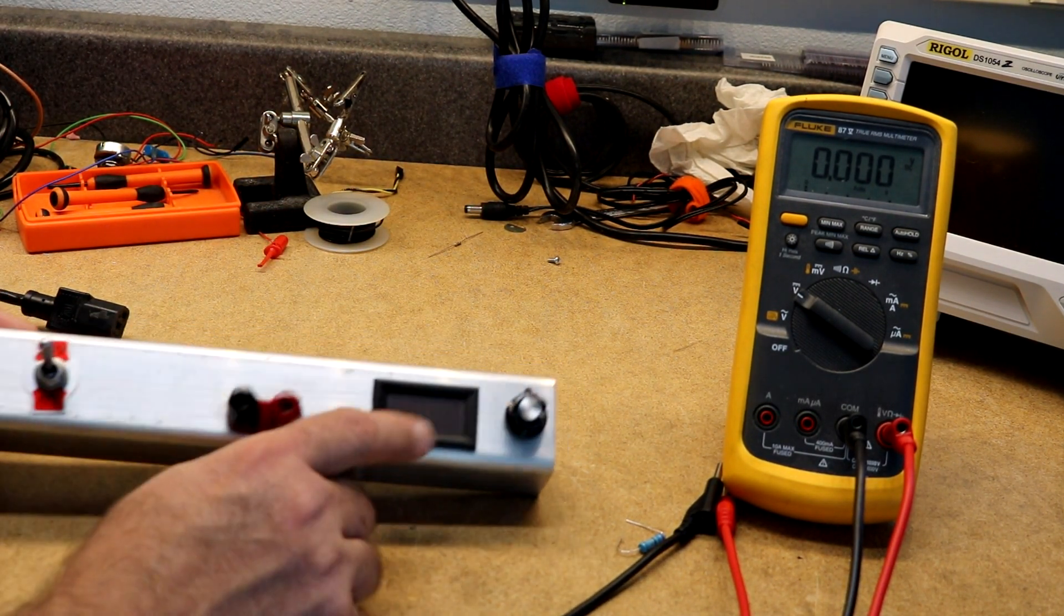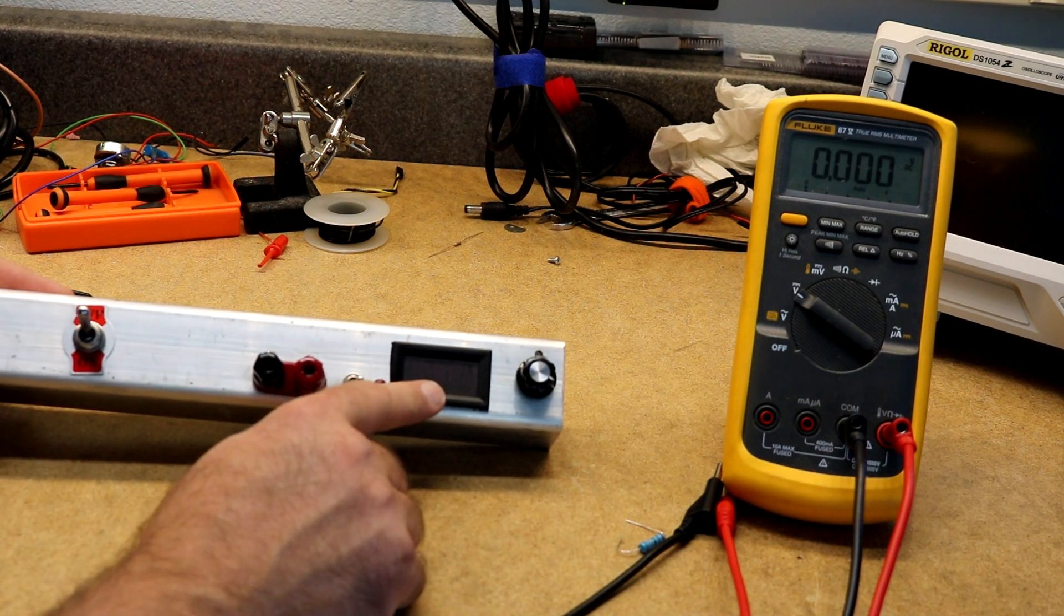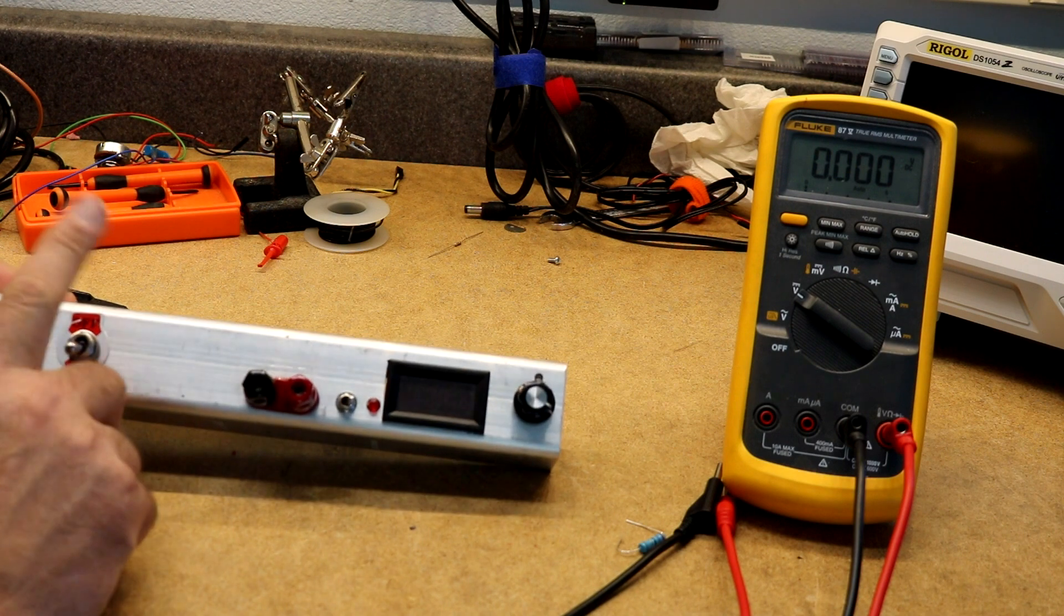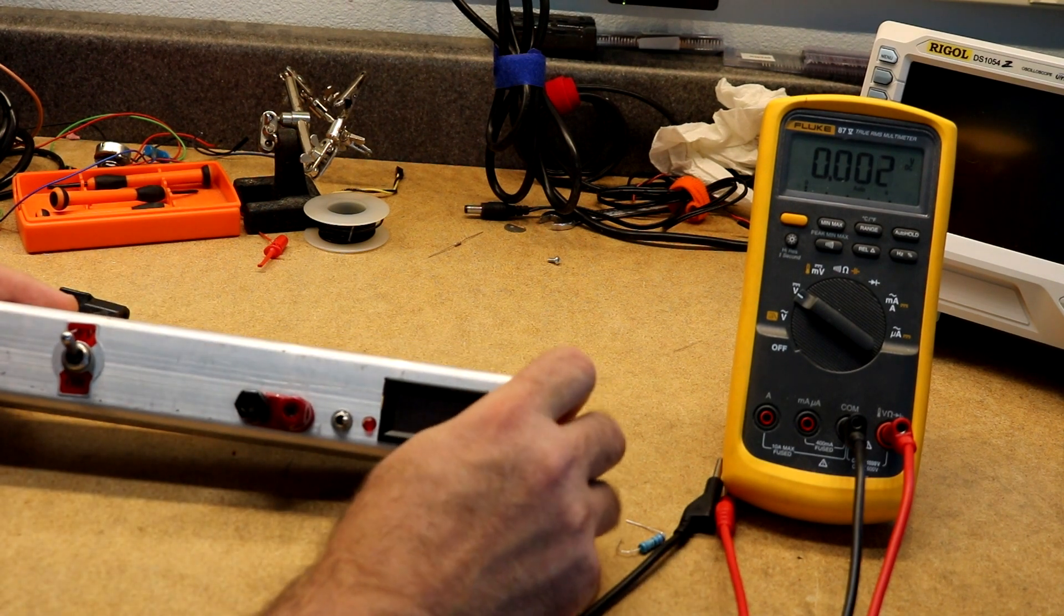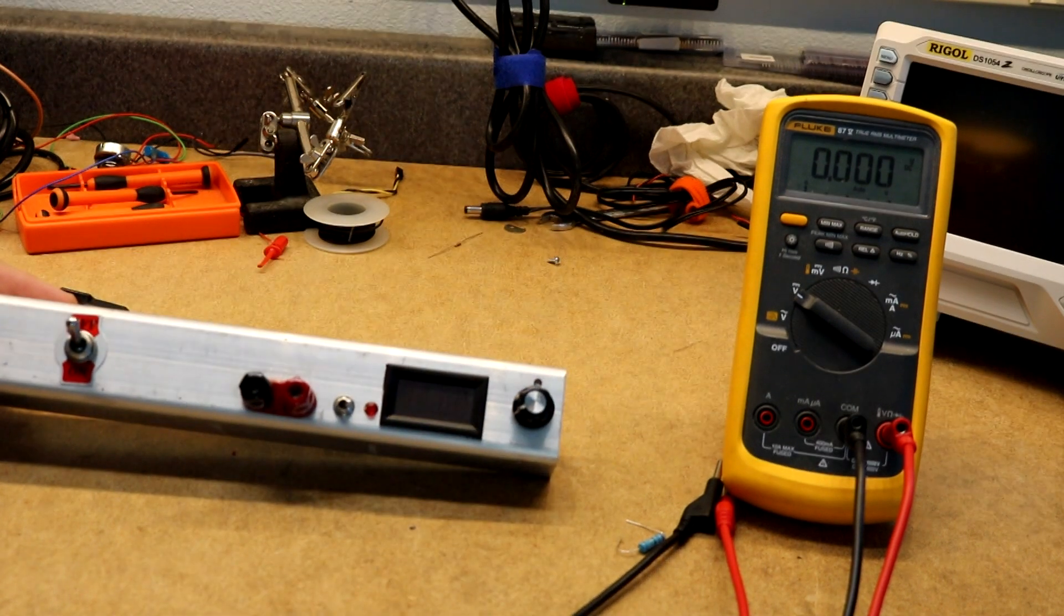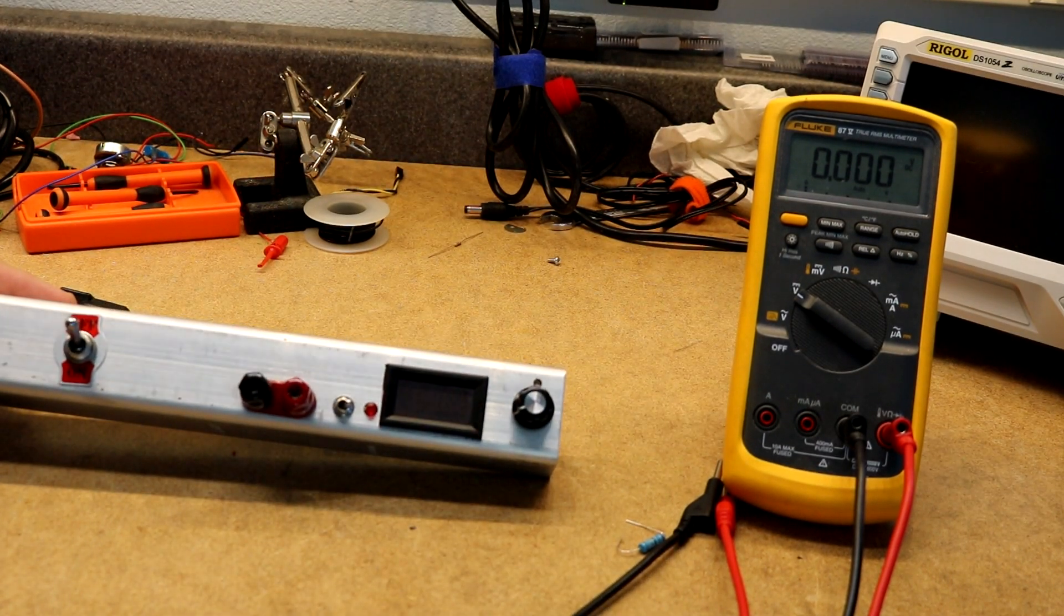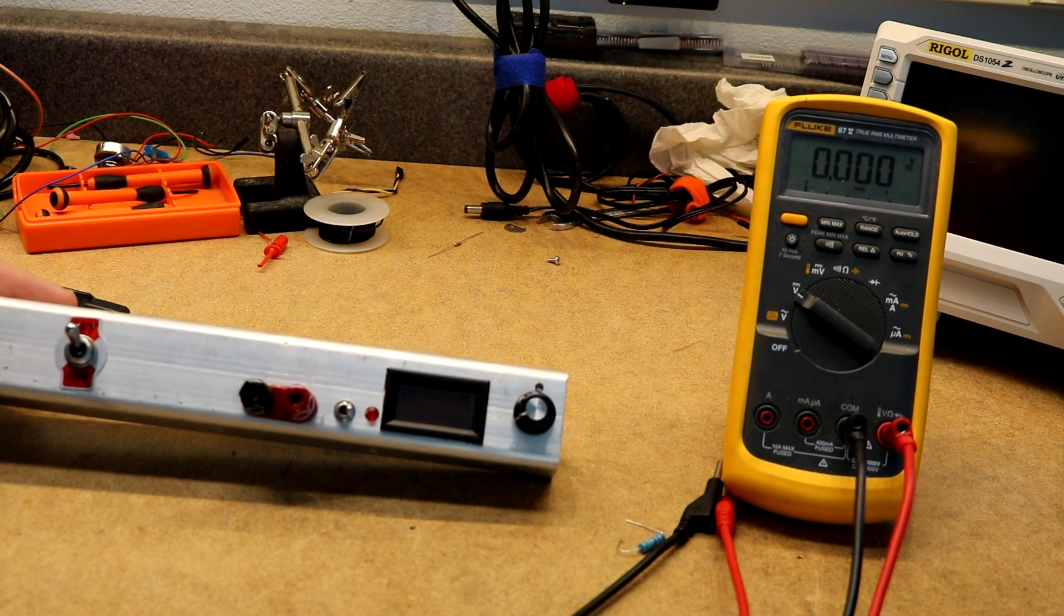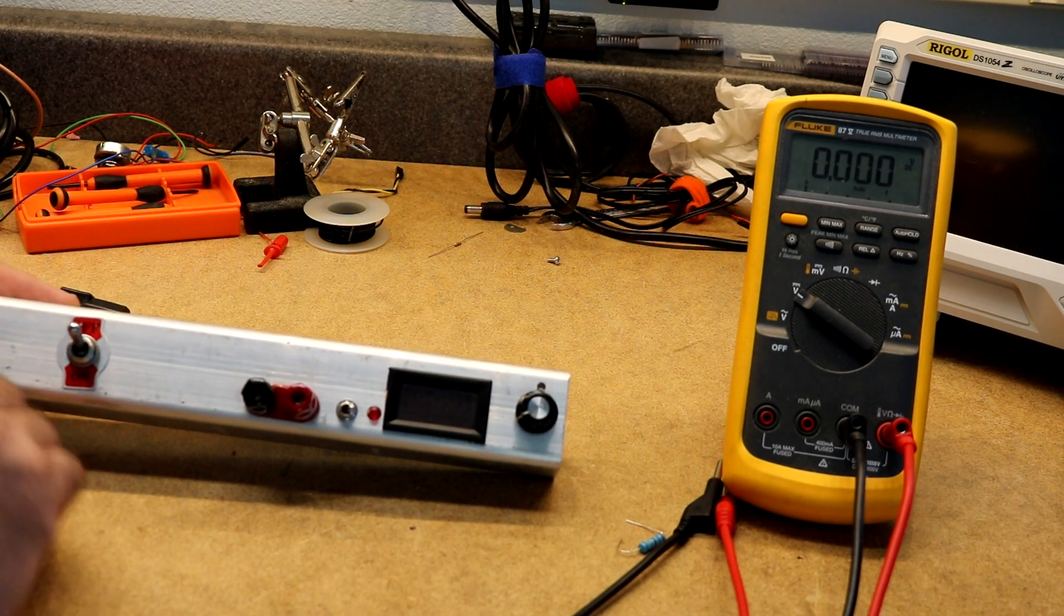It's got a few controls on it. There is a meter here that will display the amps, there is an on-off switch, and there is a potentiometer that will adjust the current. Now I've designed this as a fixed 5 volt supply because I already have numerous adjustable supplies. I don't need any of those but it's nice to have an extra 5 volts on the bench.